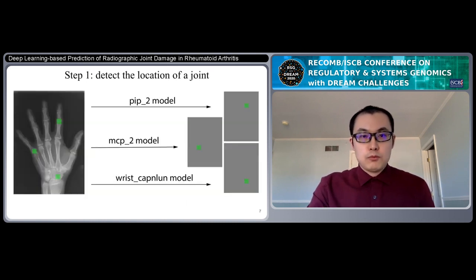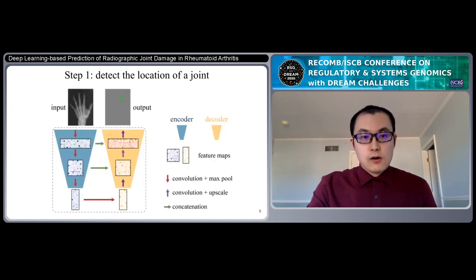At the first step, we need to detect the location of joints. We first label the location by a square mask. And then for each joint, we build a specific deep learning model to predict the location. We adapted a classic convolutional neural network model, U-Net, which has an encoder and a decoder and multiple operations used to extract features from the original image. And then we build a model for each joint.